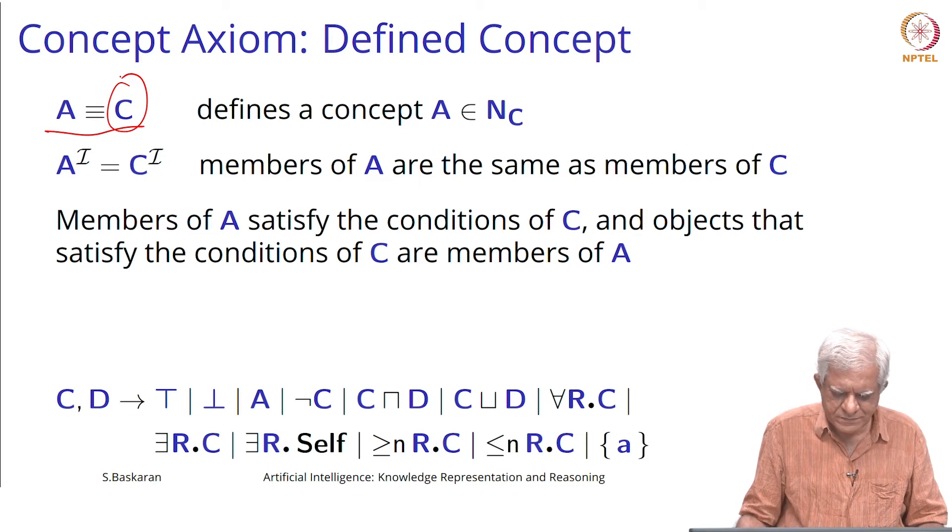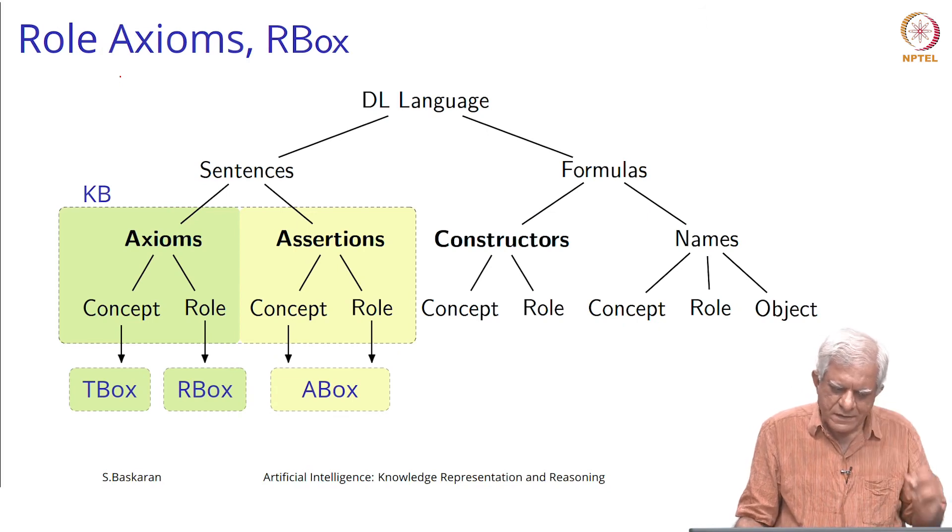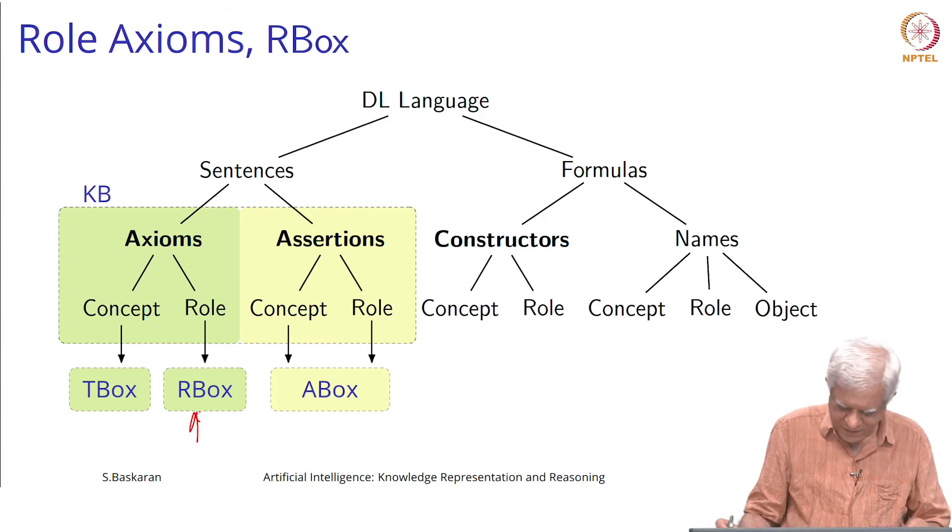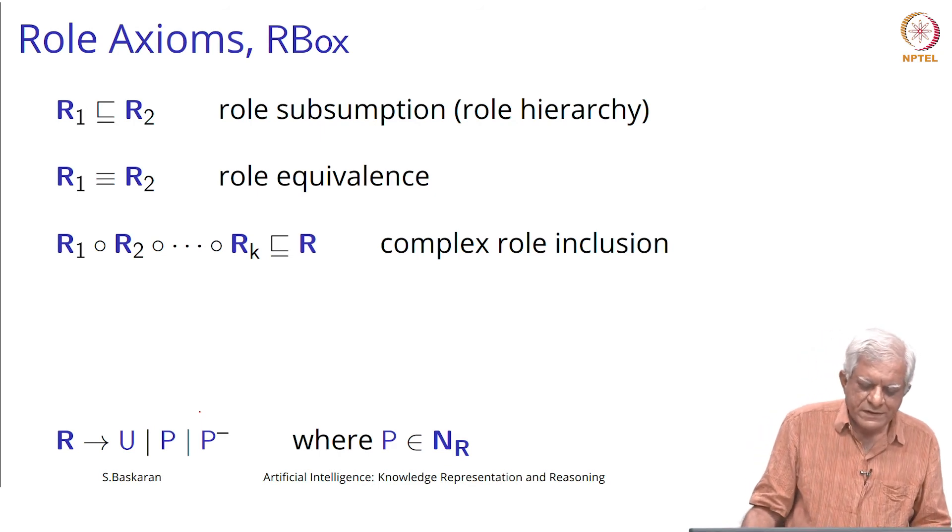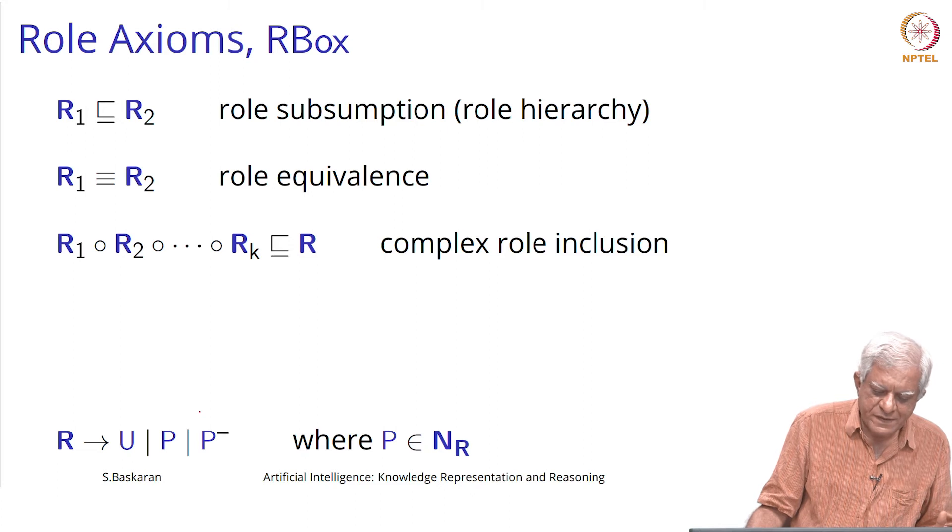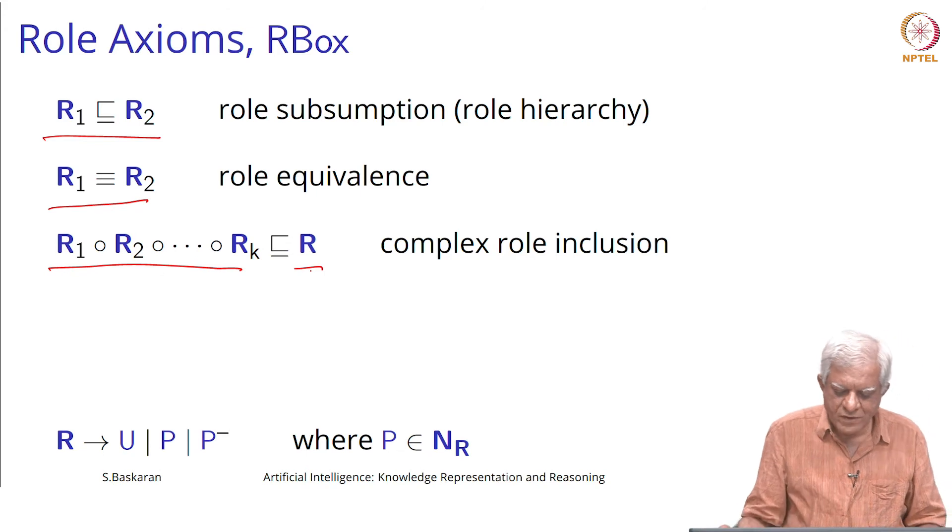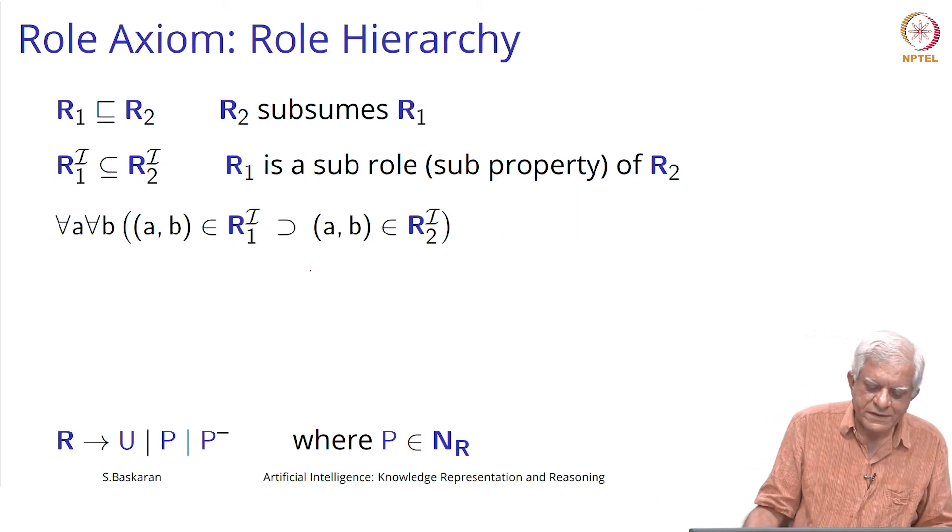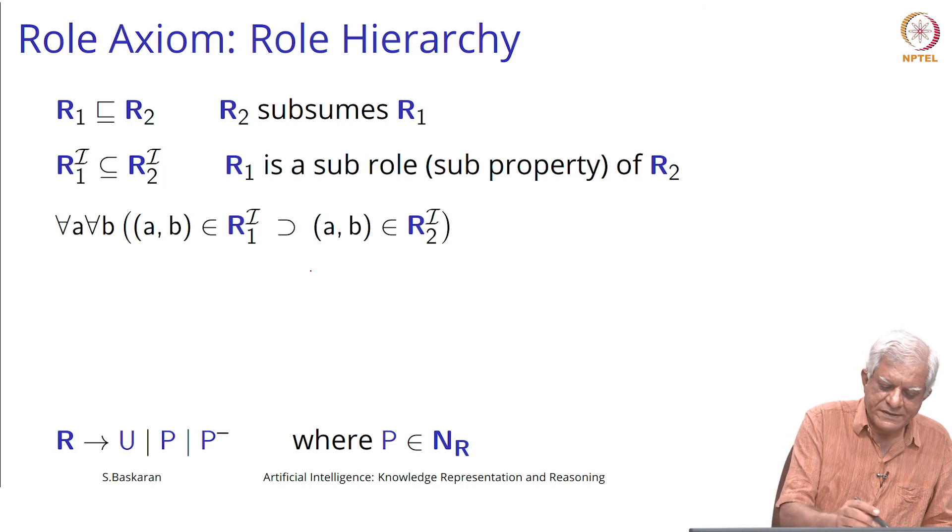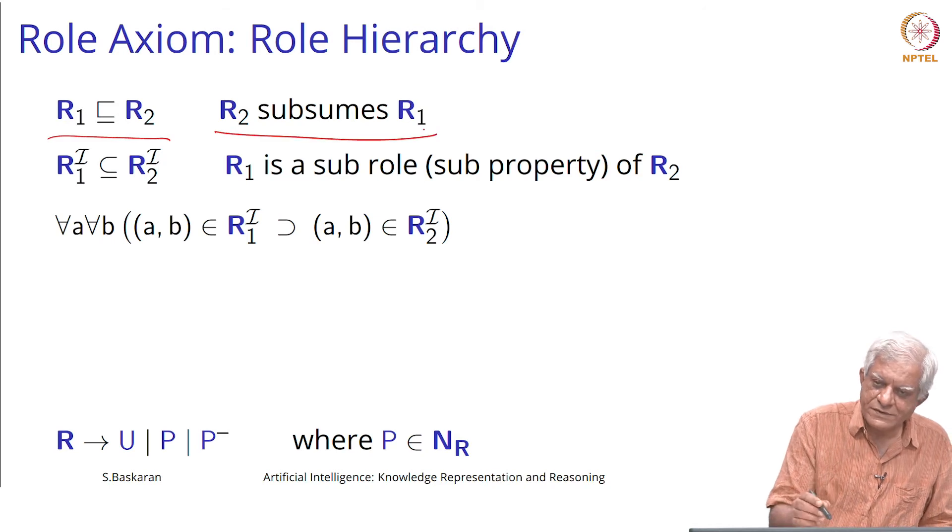Let us talk about role axioms or what goes into the R box. There are three things here that R1 is subsumed by R2, R1 is equivalent to R2, or a role chain is subsumed by some role R.